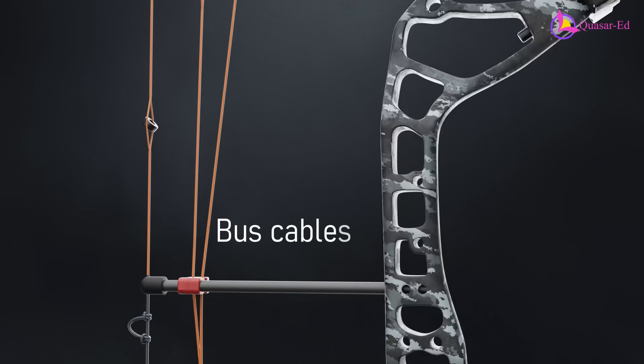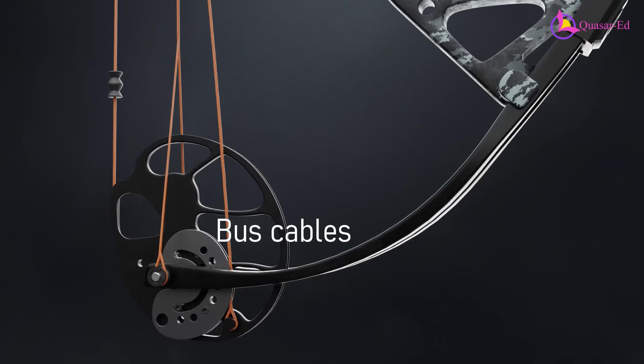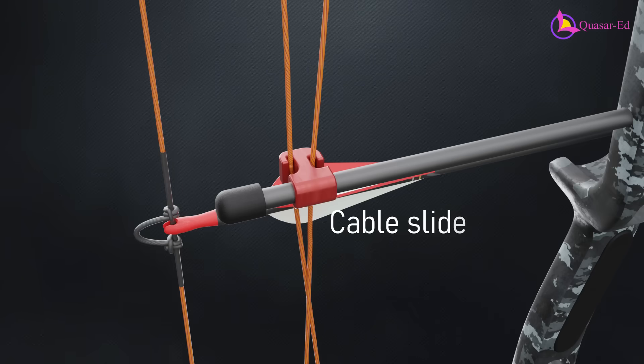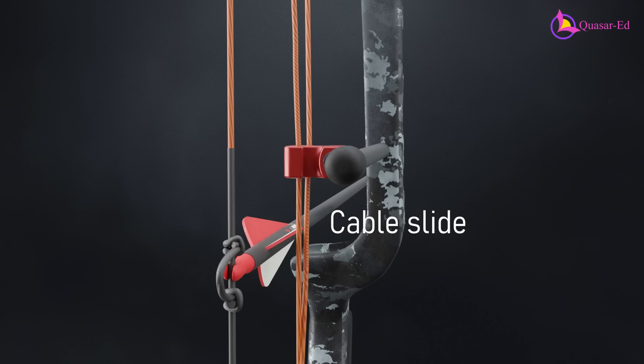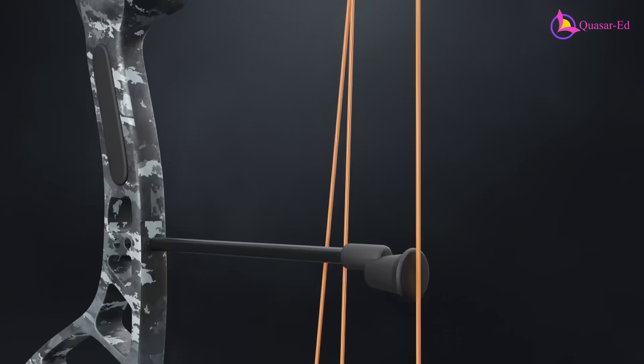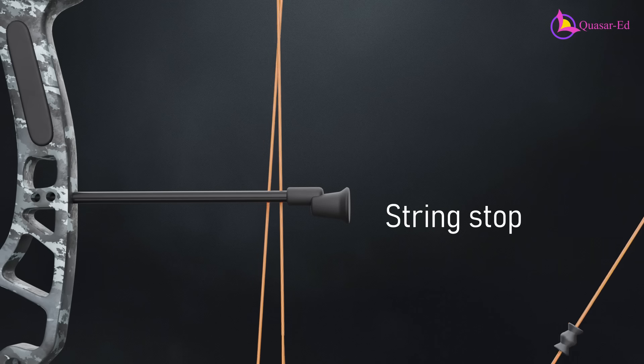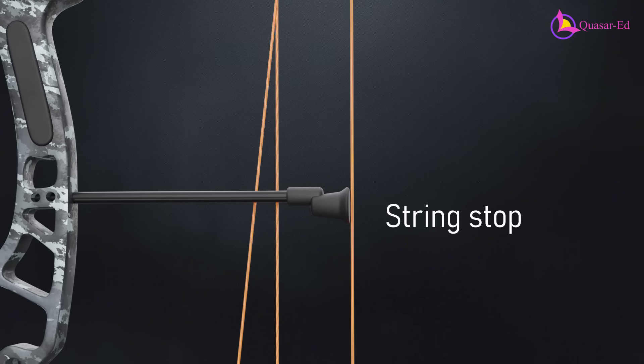There are also additional strings called bus cables, which connect the cams to the limbs. A component called the cable slide moves these cables out of the way so they don't interfere with the bow string or the arrow's path. To reduce excess vibration after a shot, a string stop is used, preventing the bow string from oscillating back and forth and minimizing noise.